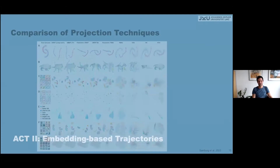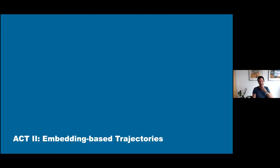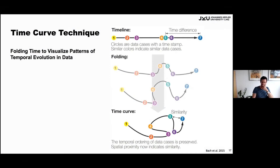This concludes the first part. Now the second part: embedding-based trajectories. There was a really powerful technique published by Benjamin Bach and colleagues called the Time Curve technique. You have sequential or temporal data; you see it as a sequence and fold the curve according to the similarity of data items — the more similar the color, the more similar the data items. You can see that time points three and six come closer together because they're more similar.